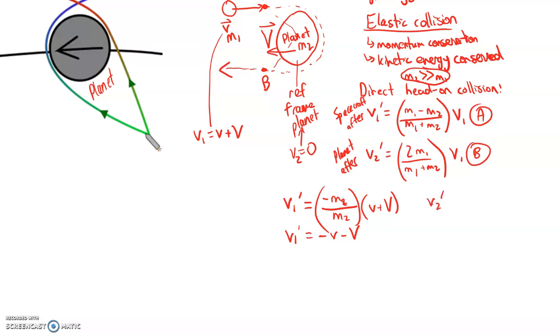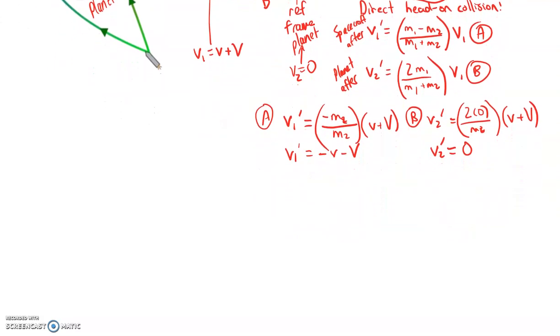V2 primed, looking at equation B, is equal to—remember that M1 is practically zero—so it's basically saying two times zero divided by zero plus M2, which of course is still going to be zero, times V1 where V1 was v plus capital V. And so this is just zero. Now let's put those back in terms of the planet actually moving and see what we get here. Put it back in terms of its original reference frame. Our original reference frame should be at rest outside of that planet and spaceship system.